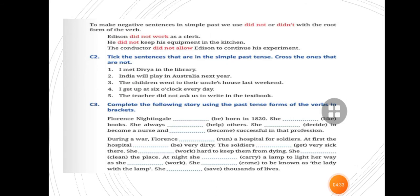When we make negative sentences in simple past tense, we use did not or didn't with the root form of the verb. Edison did not work as a clerk. He did not keep his equipment in the kitchen. The conductor did not allow Edison to continue his experiment. We use did not in the past tense. Did not plus root form of the verb, the first form of the verb.